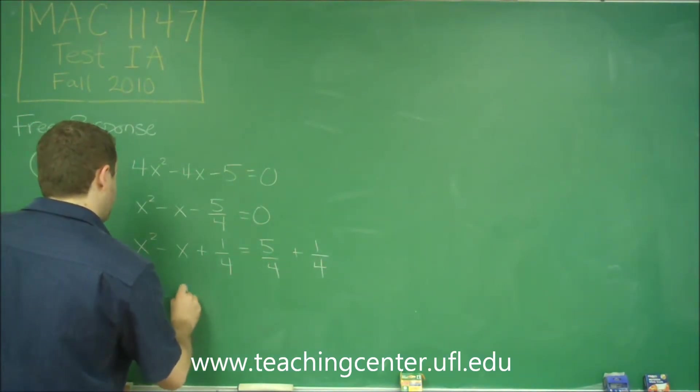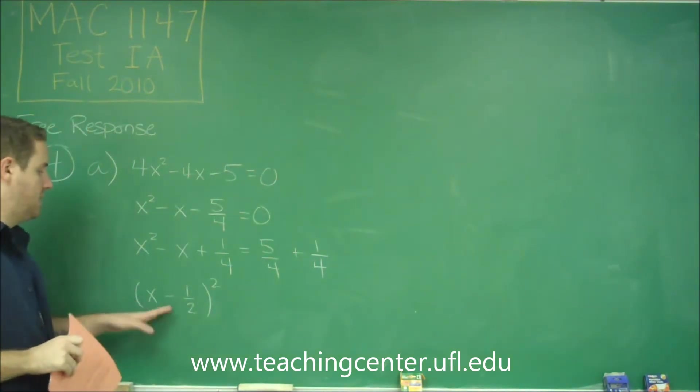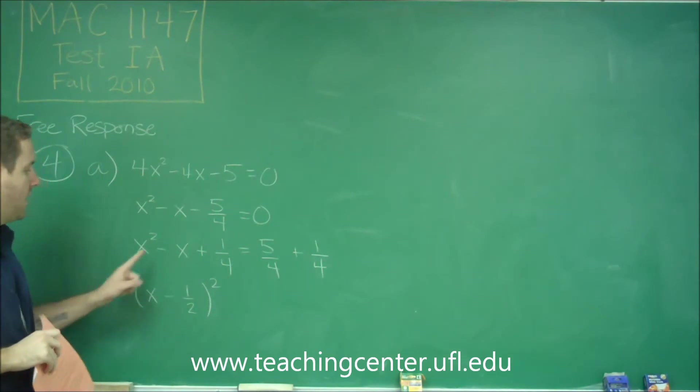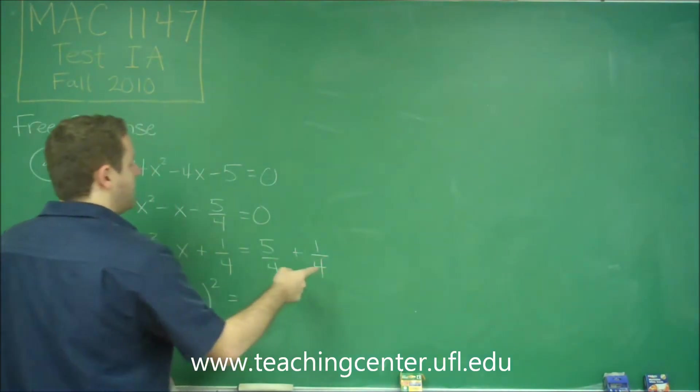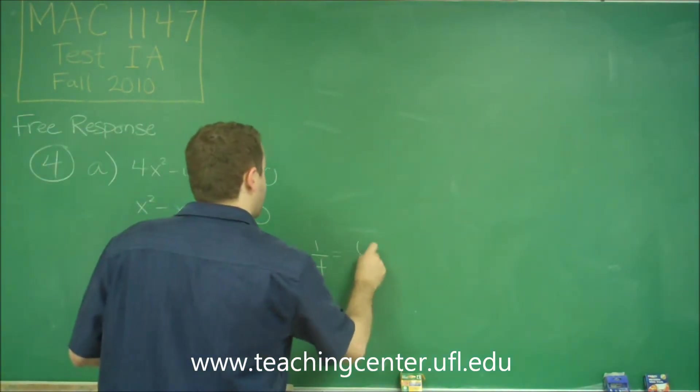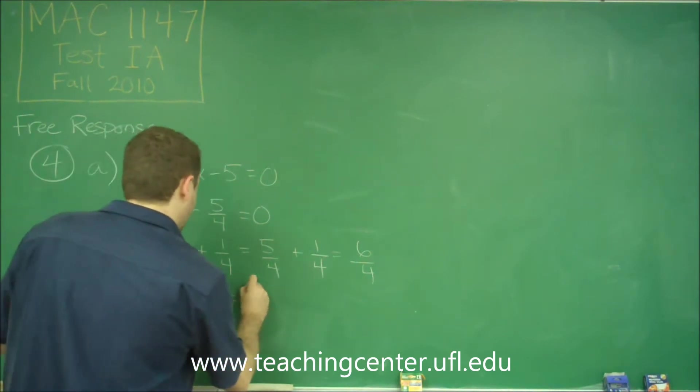You always are able to factor your remaining quadratic as x, either minus or plus depending on this sign, that half number that was there. So half of this was the 1/2, that's where it is. On the right side, we have 5/4 + 1/4, 6/4, but that can be reduced to 3/2.